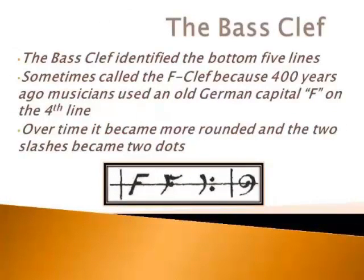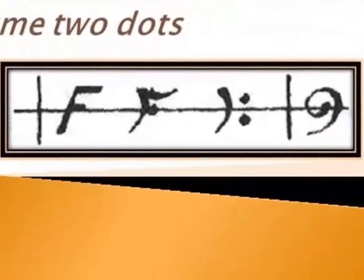Here we have the bass clef. The bass clef is the bottom five lines of the grand staff, and it was often called the F clef. Because many years ago, what musicians used to do is write an old German capital F on the fourth line. Again, that fourth line is the F line, so that becomes one of our landmarks for naming notes. You can see on this slide how the F clef or the bass clef changed over the years to become more rounded, and where we had two slashes many years ago, it became two dots. And those two dots are on the top and the bottom of the F line. So that makes it really easy to know where F is in the bass clef, which makes it one of our landmarks.